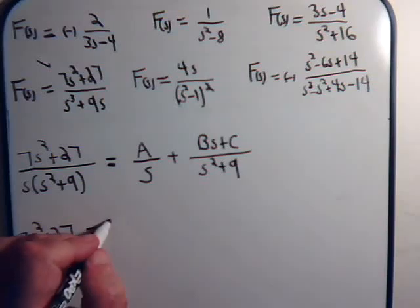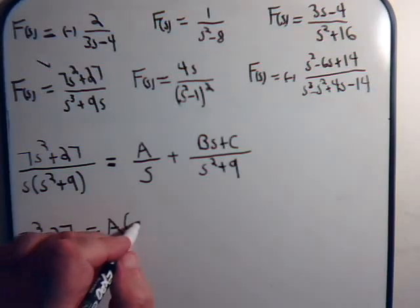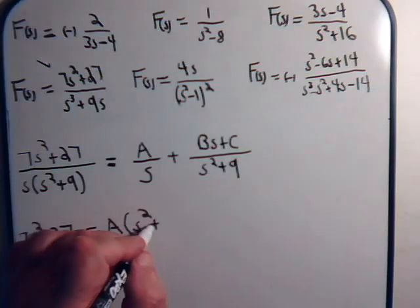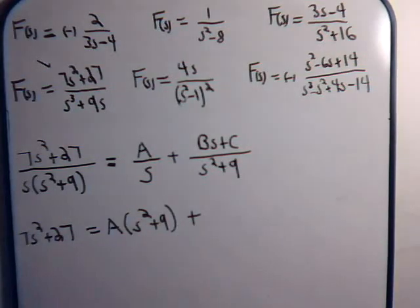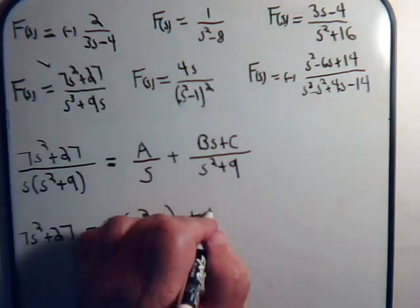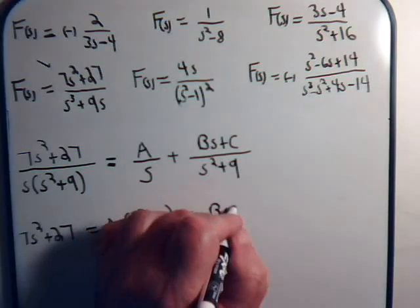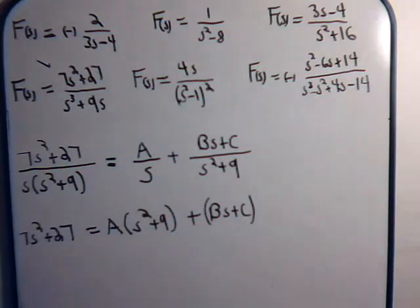This is a quadratic expression. So this is going to be B times s plus C divided by s squared plus 9. Now we multiply across and we're going to end up with 7s squared plus 27 equals A times s squared plus 9 plus B times s plus C times s.